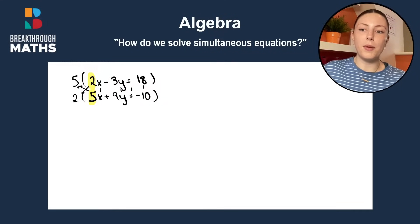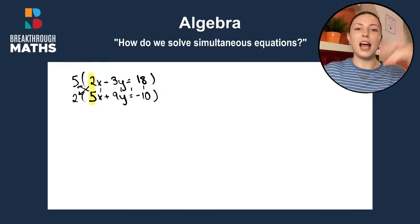So, we multiply them by the opposite number. Okay, so we find the number in front and multiply by the number in front of the x on the other equation.